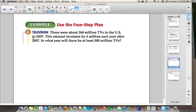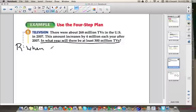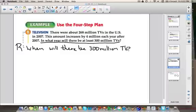Here's our first problem that we're going to solve today. It's about televisions. It says, there were about 268 million TVs in the US in 2007. This amount increases by 4 million each year after 2007. In what year will there be at least 300 million televisions? So let's start out. We're going to first start with the R. And that means we're going to restate the problem. We're going to figure out what is the problem? What is the thing we need to figure out? A good hint is it's usually the part that has the question mark on it. It's usually towards the end of the problem, which is exactly where it is in this problem. It says, in what year will there be at least 300 million televisions? So that means we can say, when will there be 300 million TVs?